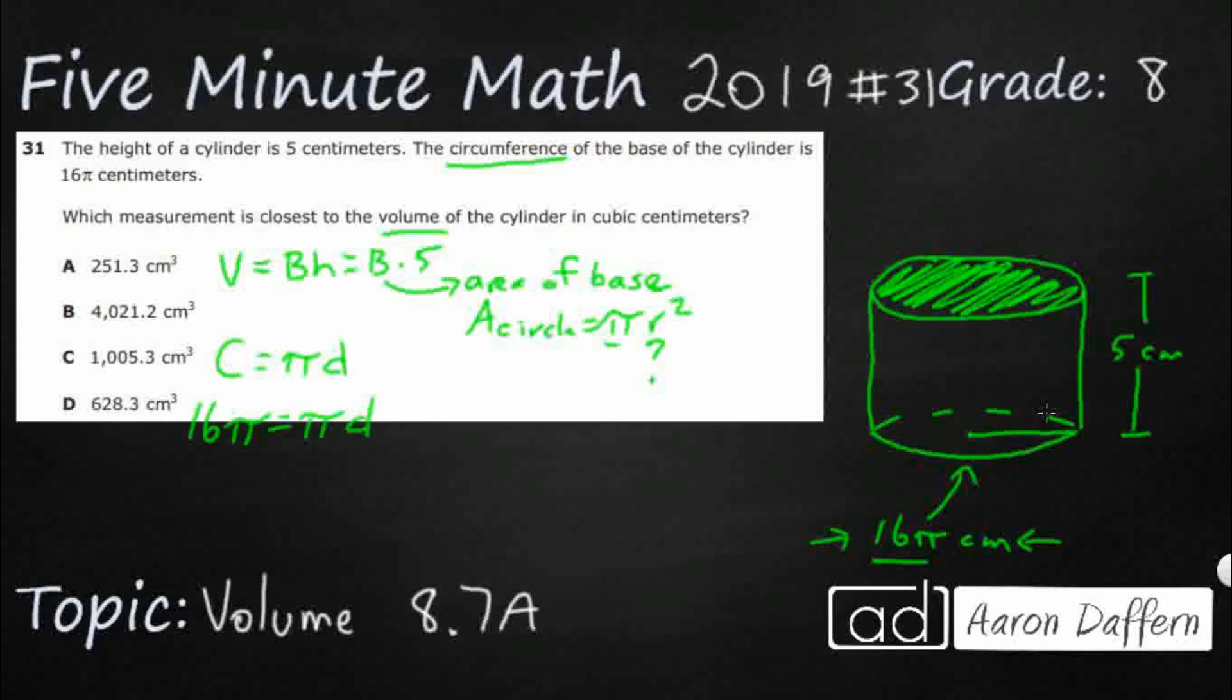Watch what happens when I do this. What if I divide? I notice there's a π on both sides. To keep a balanced equation, what if I divide both sides by π? It's just like dividing both sides by one. As long as you do it to both sides, you're fine. Now I know that my diameter equals 16.